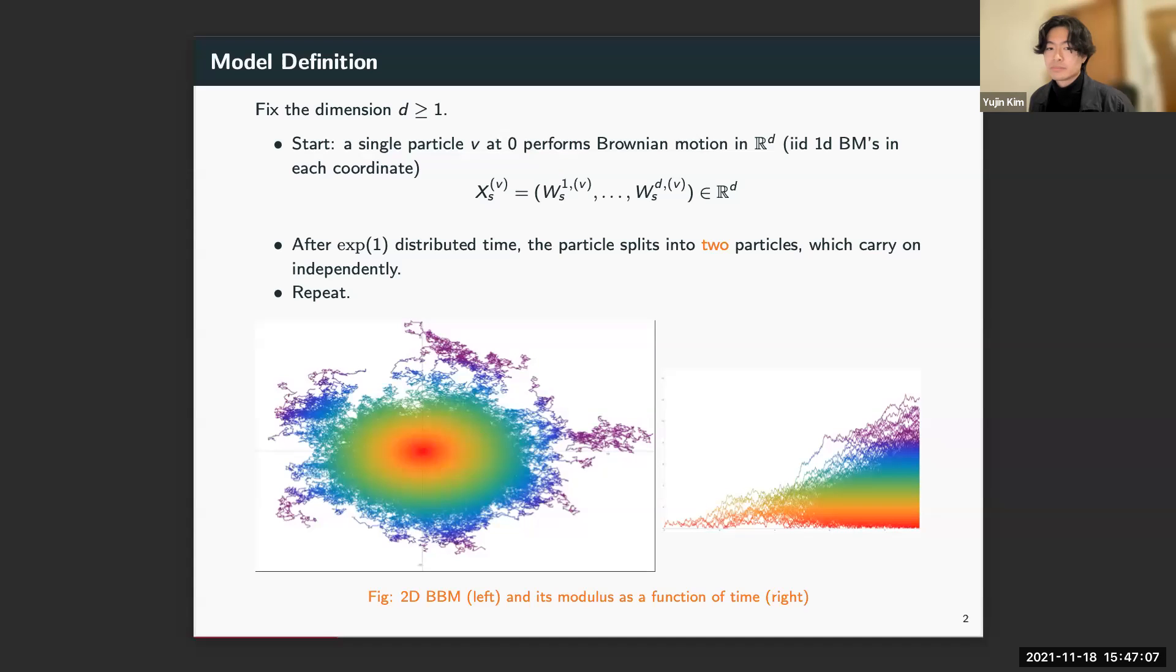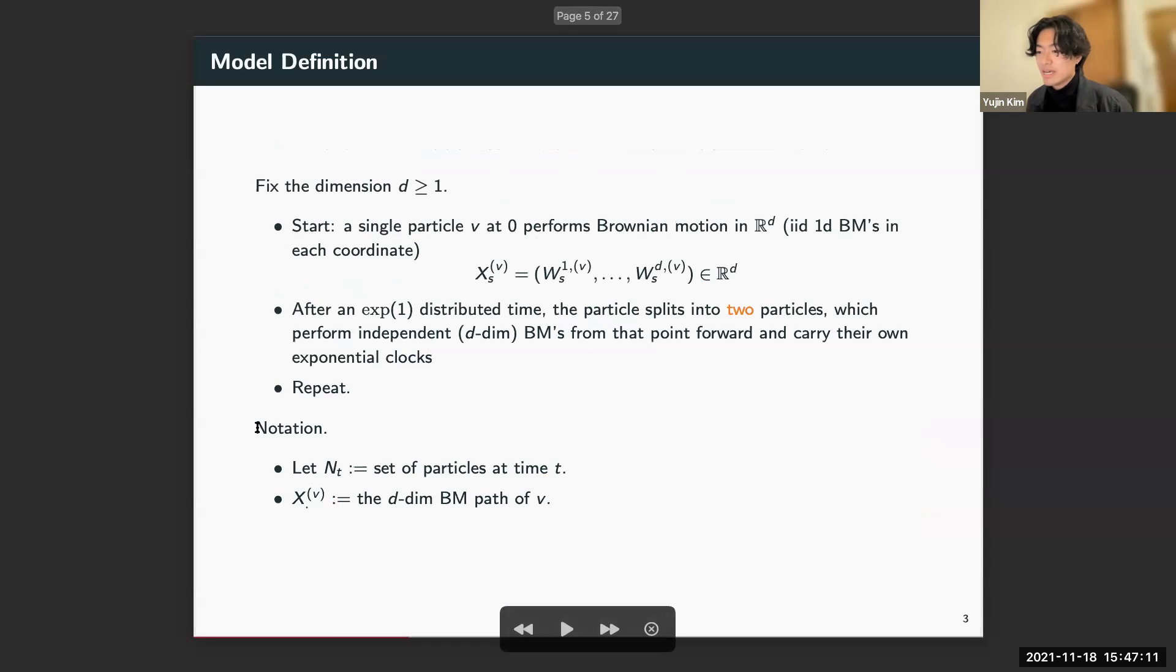Okay, to fix some notation, I'll write N_t to denote the set of particles at time t. And just as a reminder, X^v means the Brownian motion path of the particle v.